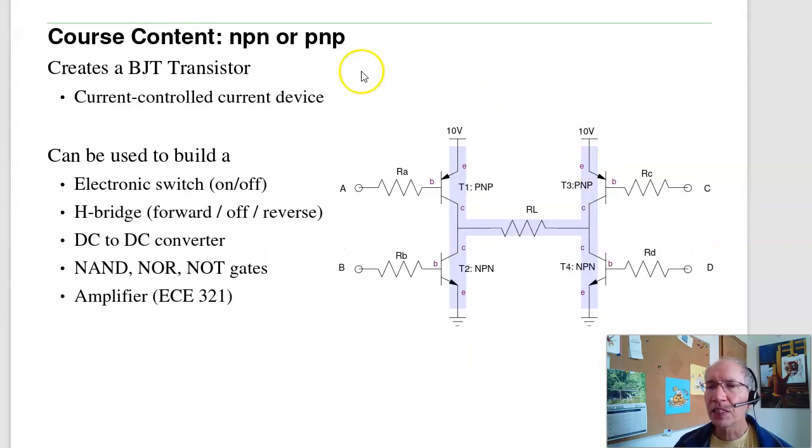If I take the silicon and put the types together, I can do NPN or PNP, when I have three types. That makes a bipolar junction, or BJT, transistor. Essentially, transistors are current-controlled current devices. With them, I can build an electronic switch, turn a motor on or off. I can build an H-bridge, have something wimpy, like a microprocessor, turn a motor full forward on, turn it off, make it go in full reverse. I can build DC to DC converters, convert 12 volts DC down to 5 volts DC. I can build NAND, NOR, and NOT gates. And I can also build amplifiers.